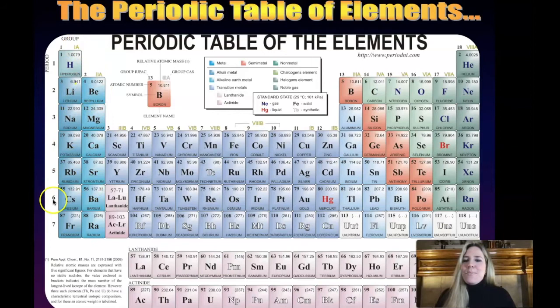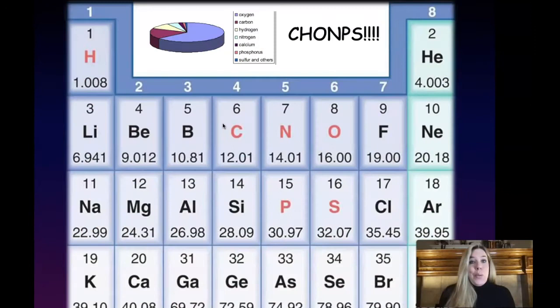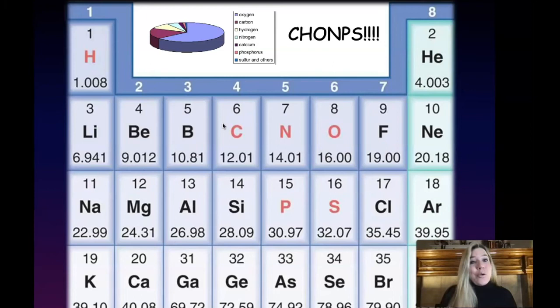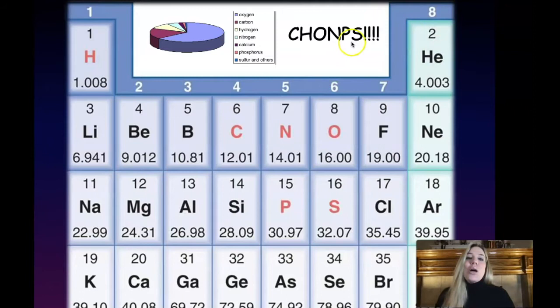We're going to be sticking mainly to the left side and the right side of the table — that's where you'll find the elements most important to life. As amazing and as diverse as all the organisms of the earth are, ranging from humans and bacteria to trees and worms, we're all made up of the same elements of the periodic table — and that's very few of those 118 elements. We can use a little term called CHOMPS to describe the elements most important to life on earth: carbon, hydrogen, oxygen, nitrogen, phosphorus, and sulfur — CHOMPS.